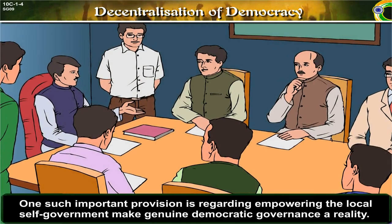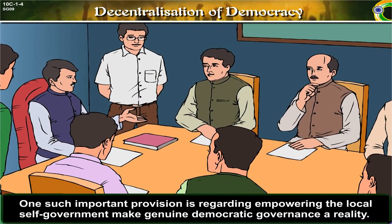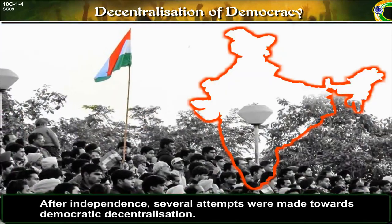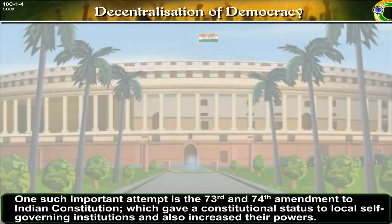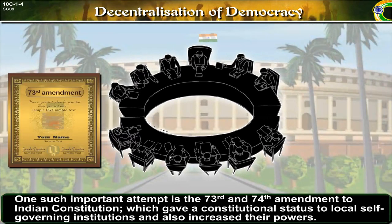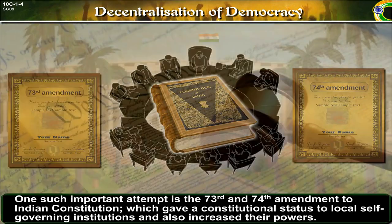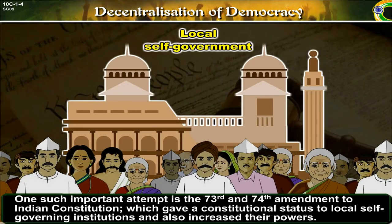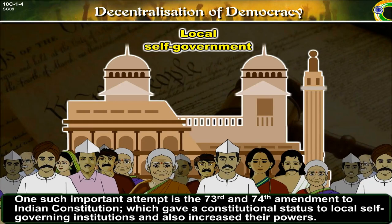After independence, several attempts were made towards democratic decentralization to make genuine democratic governance a reality. One such important attempt is the 73rd and 74th amendments to the Indian Constitution, which gave a constitutional status to local self-governing institutions and also increased their powers.